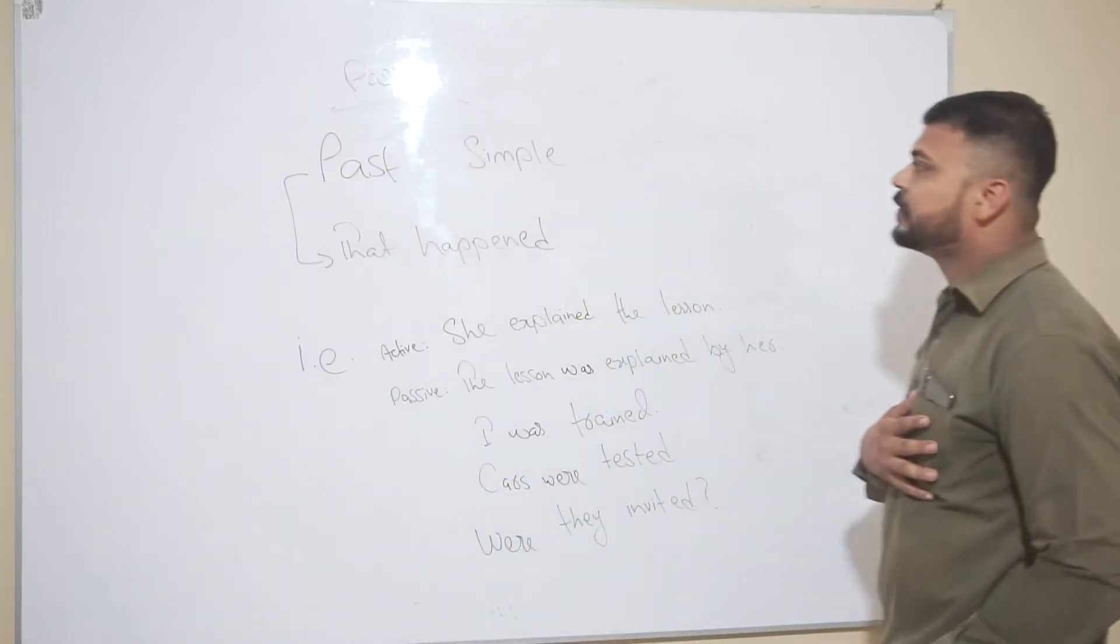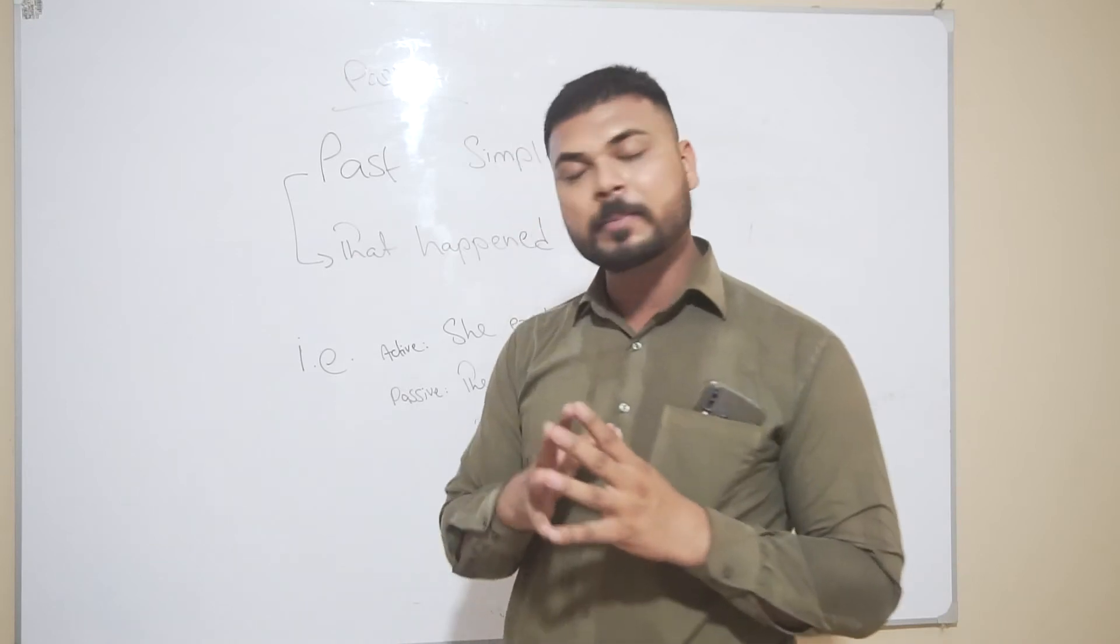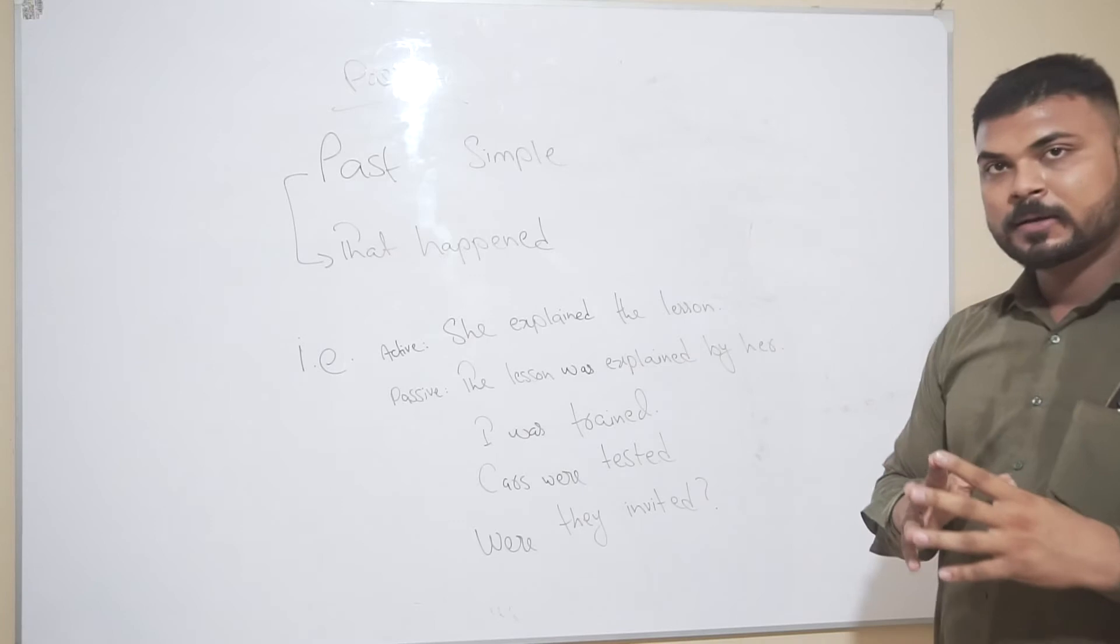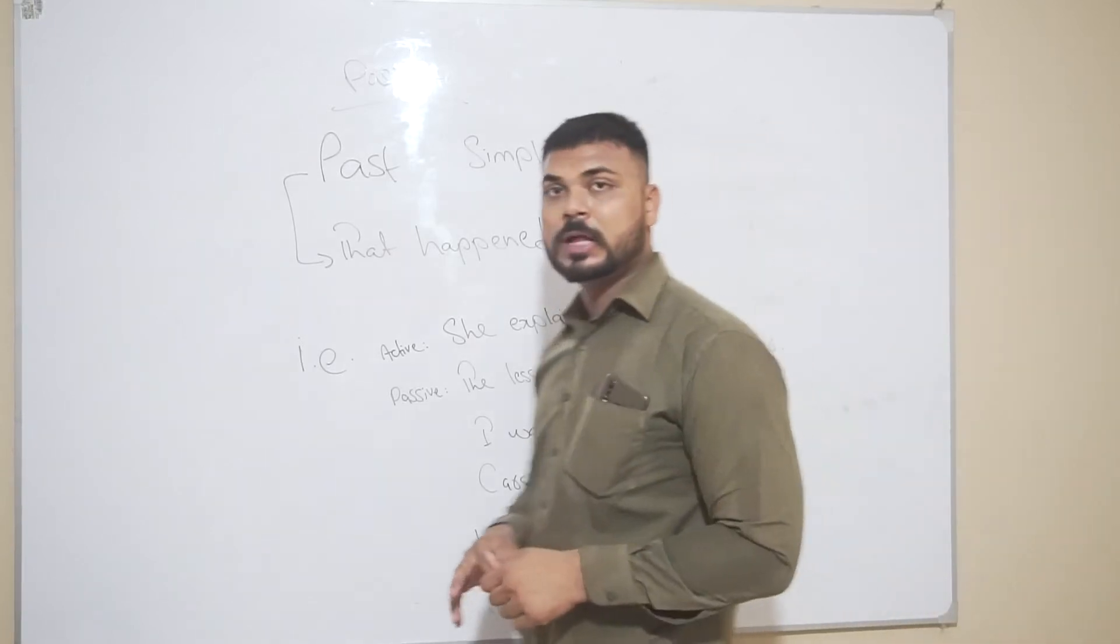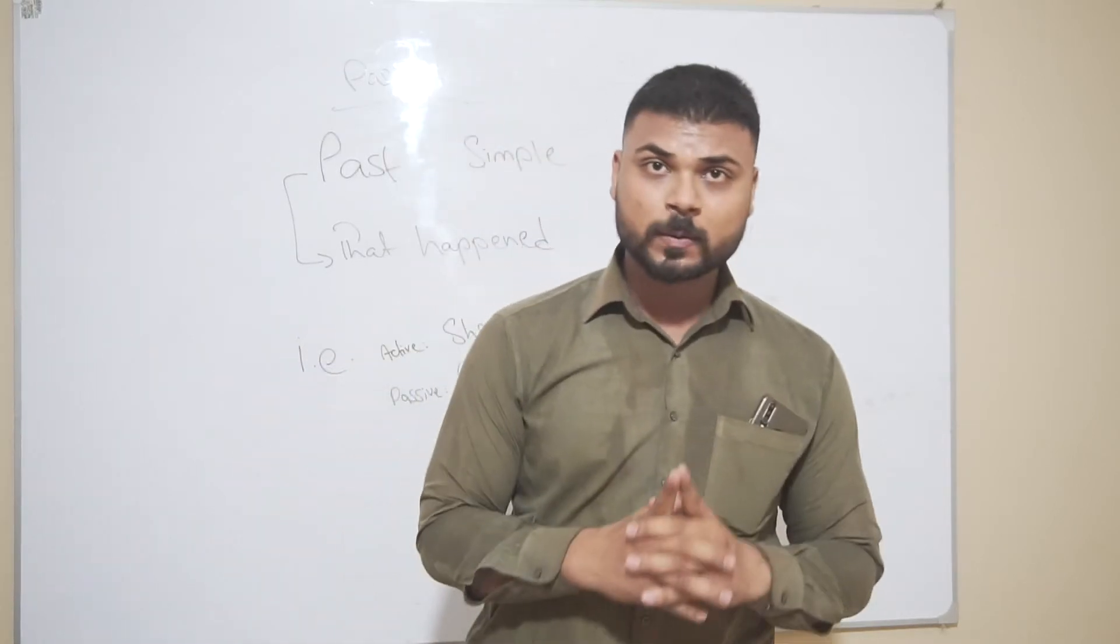So here we have another passive, which is Past Simple. I told you that the definition will remain the same, and everything will go the same. But there will be little differences like the helping verbs. So the helping verbs for Past Simple Passive are was and were.